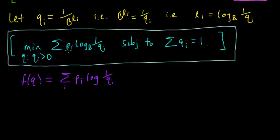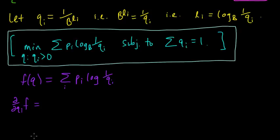Whenever we're doing a minimization problem, it's always nice if our function is convex, or even better, strictly convex. So let's see if this function is convex. In order to check convexity, we need to look at the Hessian — it's a function of multiple variables. So we need to take some derivatives and differentiate with respect to q_i.